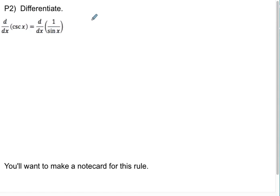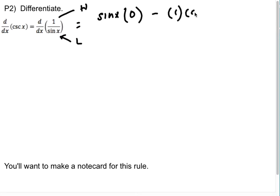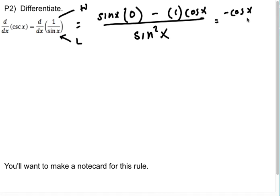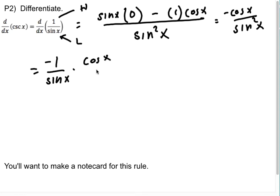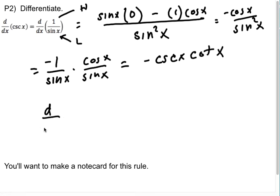For cosecant, you have a high function and a low function. Low d-high minus high d-low, draw the line, square the low. We get negative cosine x over sine squared. Splitting that into negative one over sine and cosine over sine gives us negative cosecant cotangent. So the derivative with respect to x of cosecant x is negative cosecant x cotangent x.